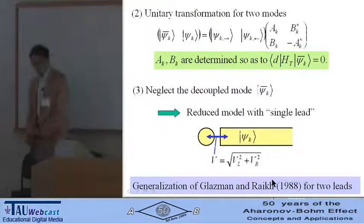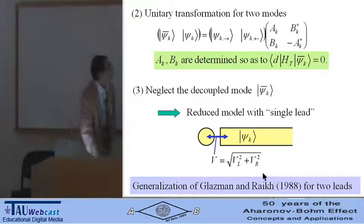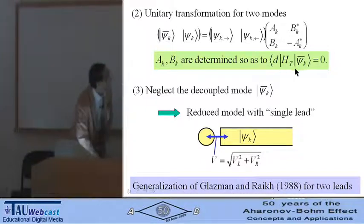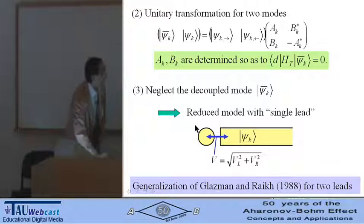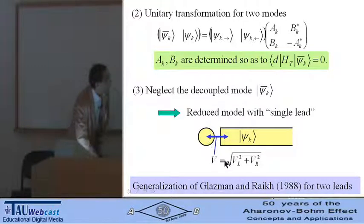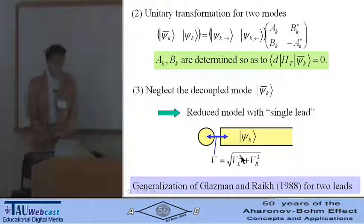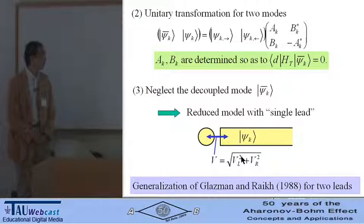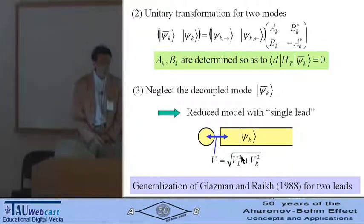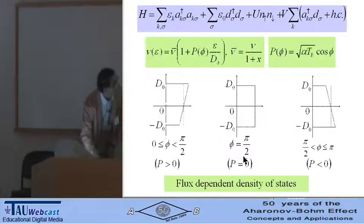Second, we perform unitary transformation for the two modes so that one of the modes is completely decoupled from the quantum dot. Neglecting the decoupled mode, we make the reduced model with single mode. This mode is coupled to the quantum dot with this tunnel coupling. This is the generalization of the paper by Glazman and Raikh for two separate leads.